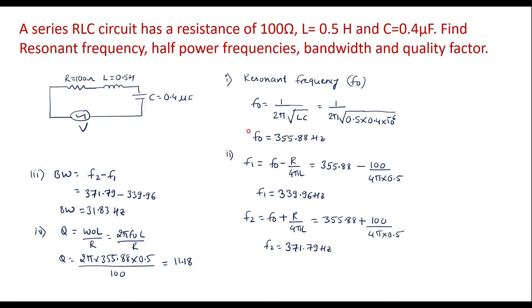Thus we found resonant frequency F0, half power frequencies that is lower cutoff frequency F1, upper cutoff frequency F2, bandwidth and quality factor Q. Thank you.